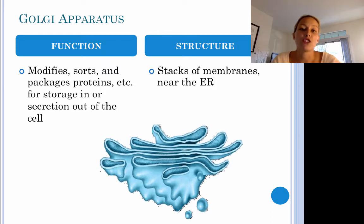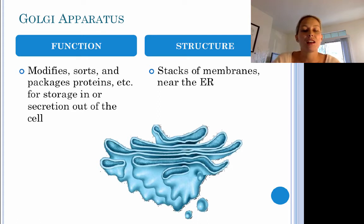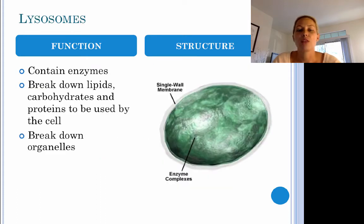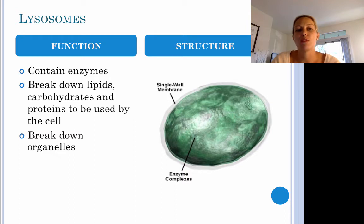Next, we have our Golgi apparatus, which is responsible for modifying, sorting, and packaging proteins for either storage within the cell or secretion out of the cell. Up next, we have lysosomes. Lysosomes contain enzymes responsible for breaking down macromolecules — lipids, carbohydrates, and proteins. Lysosomes can also break down organelles that are no longer functioning well. They're kind of the garbage disposal of the cell.